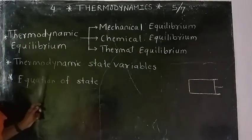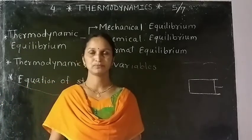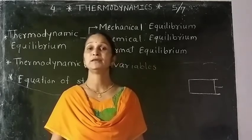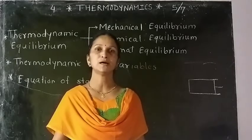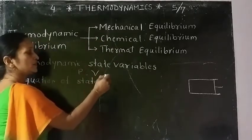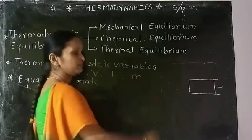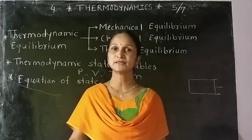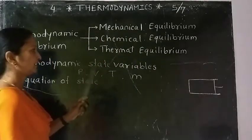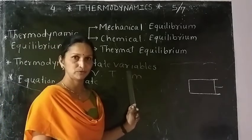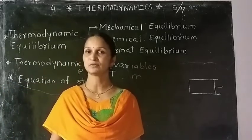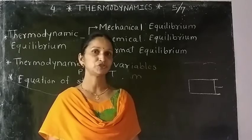The next article is thermodynamic state variables. Every system which is in equilibrium can be described by using some values — some properties such as pressure P, volume V, temperature T, and mass M. These variables describe the equilibrium state of a system and are known as thermodynamic state variables.